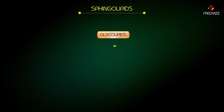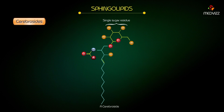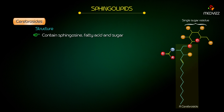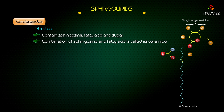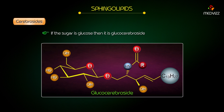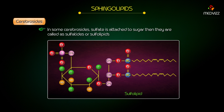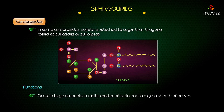Glycolipids are subdivided into cerebrosides and gangliosides. Cerebrosides — structure: they contain sphingosine, fatty acid, and sugar. The combination of sphingosine and fatty acid is called a ceramide. Cerebrosides differ in the type of sugar and are usually named according to the sugar present. If the sugar is galactose, the cerebroside is called galactocerebroside; if glucose, it is glucocerebroside. In some cerebrosides, sulfate is attached to the sugar and they are called sulfatides or sulfolipids. Functions: cerebrosides occur in large amounts in white matter of the brain and in myelin sheaths of nerves. Some cerebrosides are present in non-neural tissue as well.